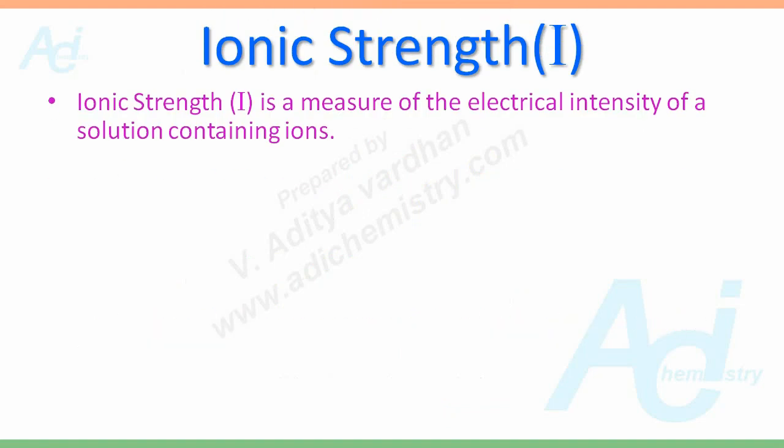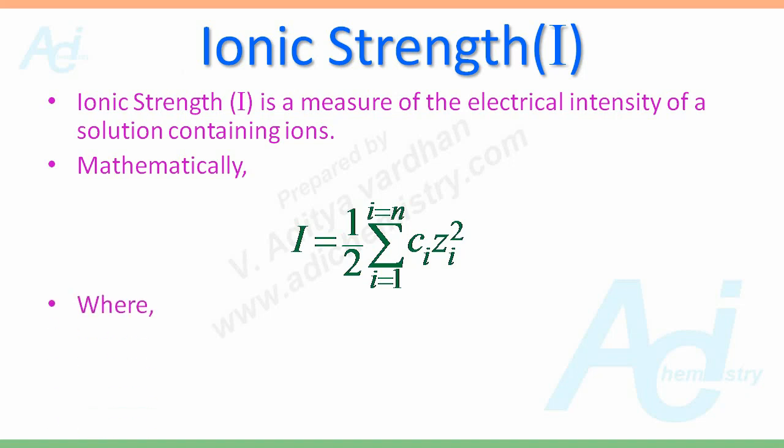So first of all, what is ionic strength? It is a measure of electrical intensity of a solution containing ions. It is represented by I. Mathematically, I is half of sum of products of concentrations and square of charges on ions. Here I is ionic strength of solution, CI is concentration of ion I, ZI is charge on the ion I.